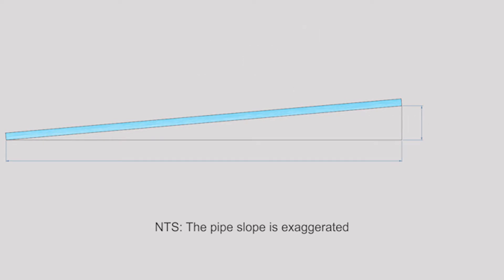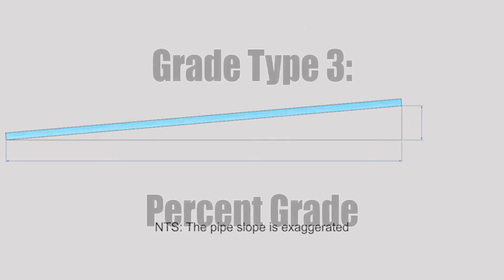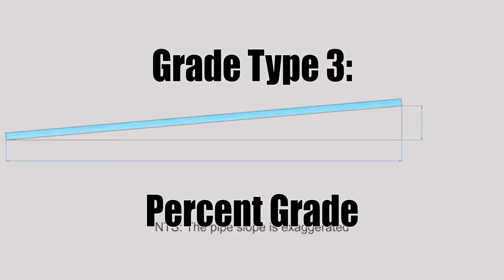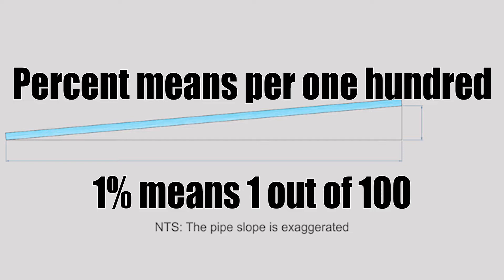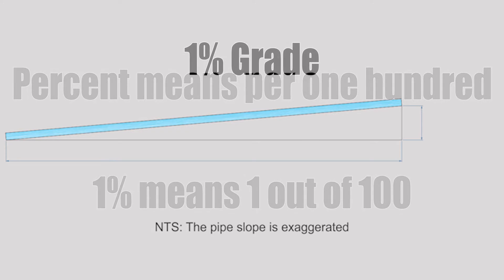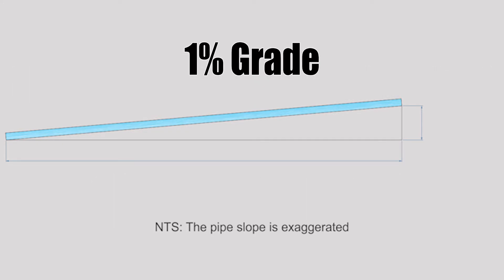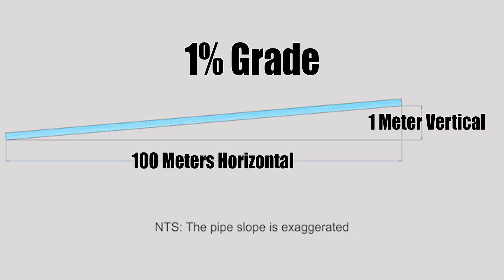The third type of pipe grade we come across is called percent grade, and it is just a mathematical representation of ratio grade. Much like ratio grade, percent grade has no unit of measurement attached to it, so it works the exact same way. For example, a pipe graded at one percent that is 100 meters long horizontally will either drop or rise one meter vertically.